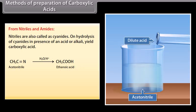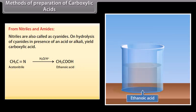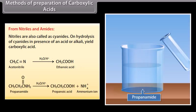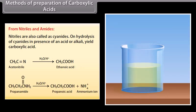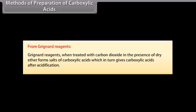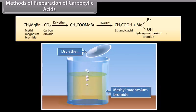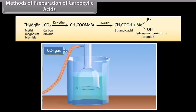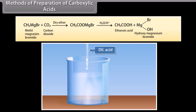Hydrolysis of acetonitrile in the presence of an acid forms ethanoic acid. From Grignard reagents: Grignard reagents, when treated with carbon dioxide in the presence of dry ether, form salts of carboxylic acids, which in turn give carboxylic acids after acidification. For example, methyl magnesium bromide reacts with carbon dioxide in the presence of dry ether to form a salt which gives ethanoic acid and hydroxyl magnesium bromide after acidification.